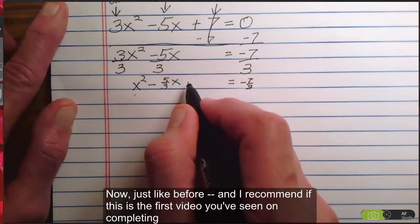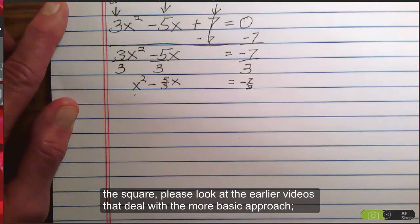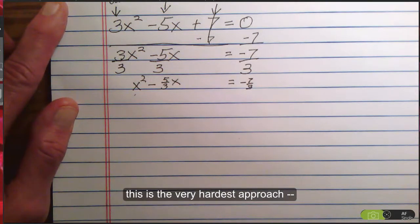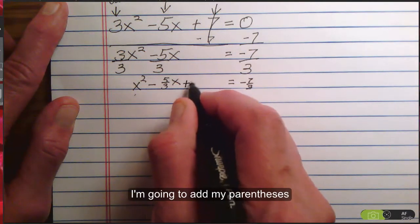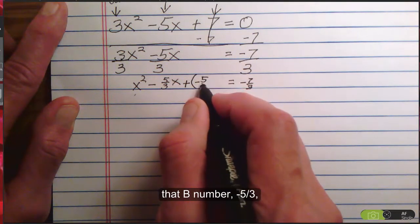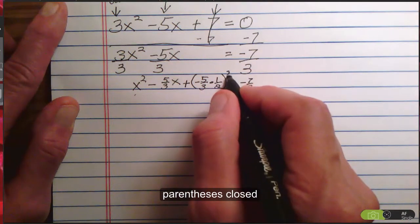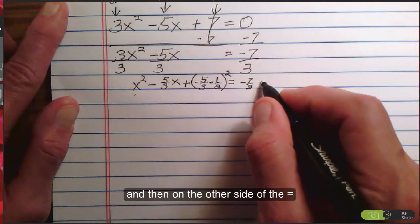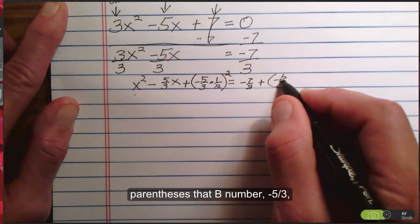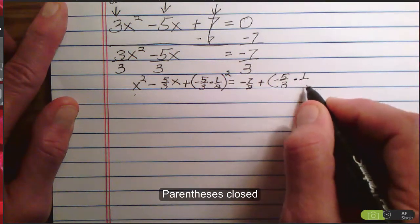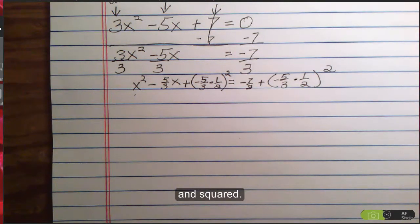Now, just like before, and I recommend, if this is the first video you've seen on completing the square, please look at the earlier videos. They deal with a more basic approach. This is the very hardest approach. Okay, I'm going to add my parentheses. The B number, -5/3, times 1/2, parentheses closed, squared.